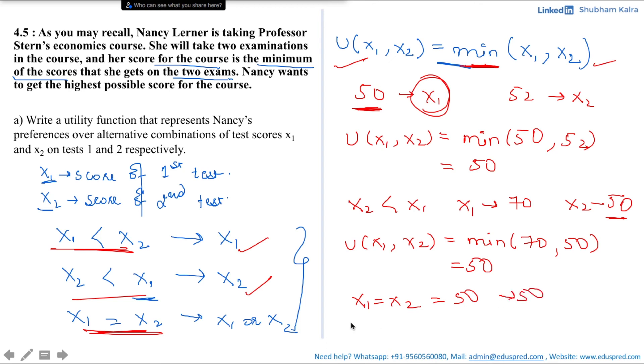Substituting into this equation, that would be U(X1, X2) equals minimum of 50, 50 as X1 is taking the value of 50 and X2 is also taking the value of 50. So that would be 50 which was something we got here. Thus, the utility function that represents Nancy's preferences of the alternative combination of test scores X1 and X2 on test 1 and test 2 respectively is minimum of X1, X2. That was all for this question.